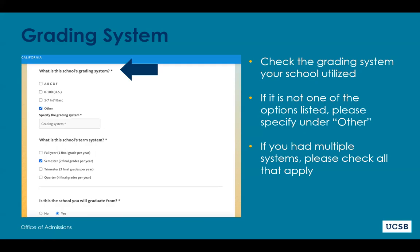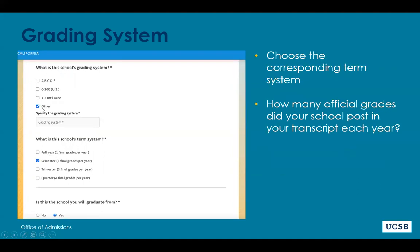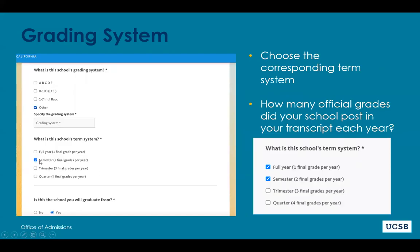If you don't see your grade term, you can enter 'other' within the application. After you've told us the type of grades we'll see, we now want to know the number of grades reflected per class — this is your school term type. Did you earn one final grade per year per class? That would be full. Two grades would be semester. Students on a block schedule or four-by-four earn two grades per year per class. Three grades per year is trimester; four grades per year is quarter.